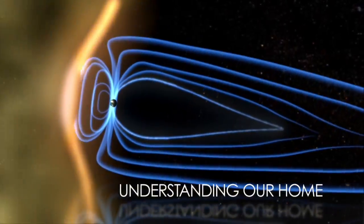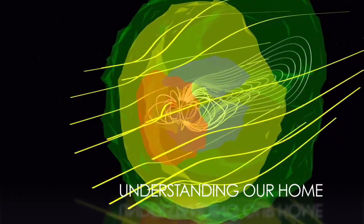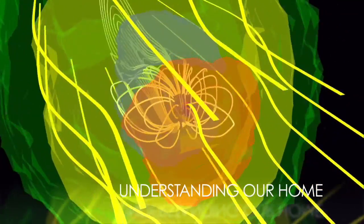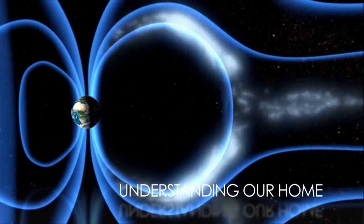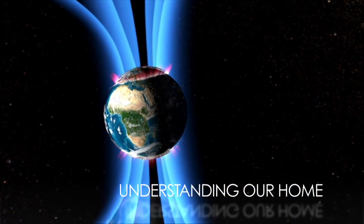NASA also studies how the Sun's variability affects our home. Solar storms and solar winds have a strong effect on the Earth and its magnetic field. By studying the Sun's natural ebb and flow, we can learn more about its role in creating phenomena such as the Northern Lights.